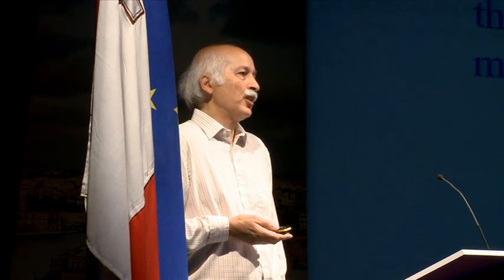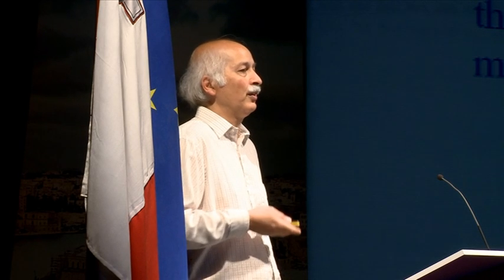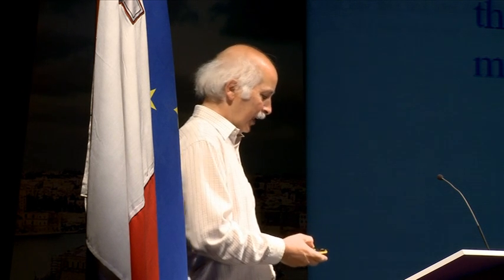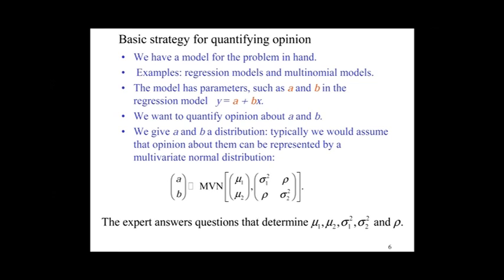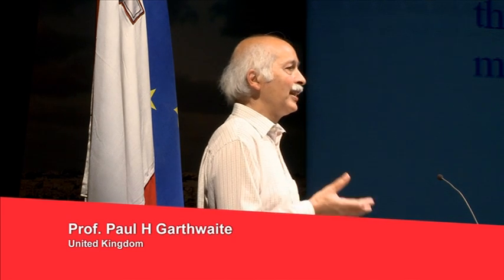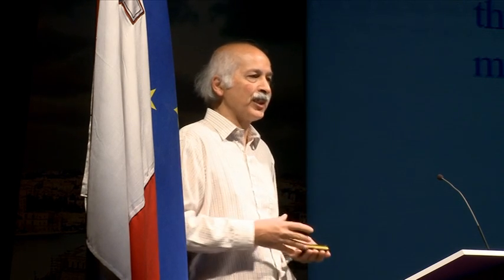The model has parameters — regression coefficients in the case of regression or multinomial models — and these are the unknown quantities about which you'd like to quantify the expert's opinion. You formulate a distribution relating to these parameters. The most common situation is a multivariate normal distribution. If you have just two parameters A and B in your regression model, you'd specify a bivariate normal distribution with mean values, the variance of A, the variance of B, and the covariance between the two. Those quantities are given by the expert and represent their opinion about what A and B should be and the associated uncertainty.